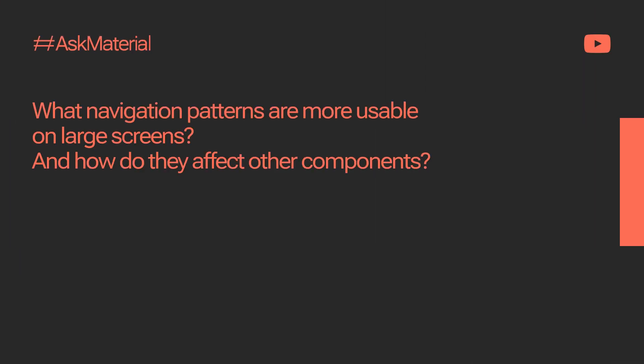Our first question concerns navigation. They ask: what navigation patterns are more usable on large screens, and how do they affect other components? I have seen some tablet and desktop apps have a side navigation rail that expands into a side drawer, and others treat the side nav rail that functions like a bottom nav on mobile. Is either of these most correct? Is it okay to use the bottom navigation bar on large screens?